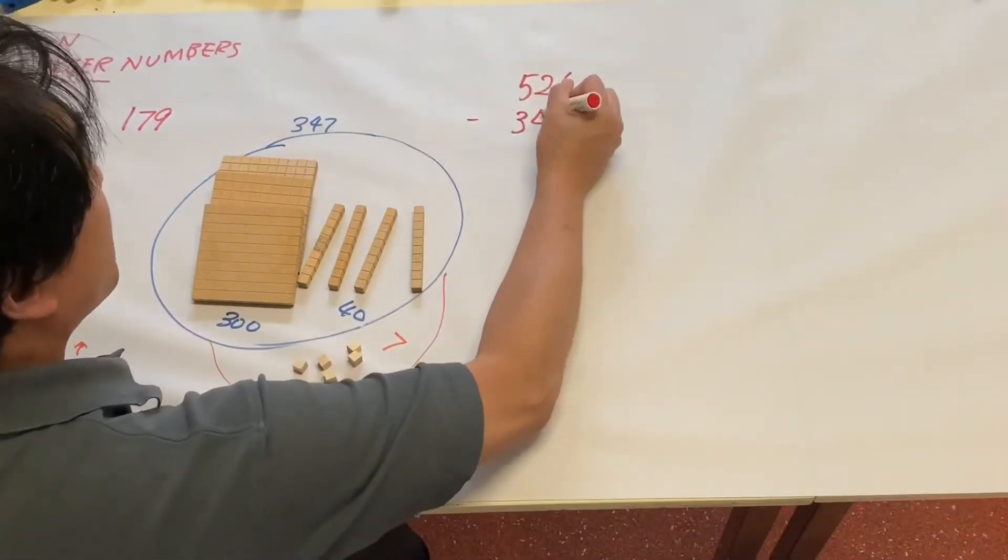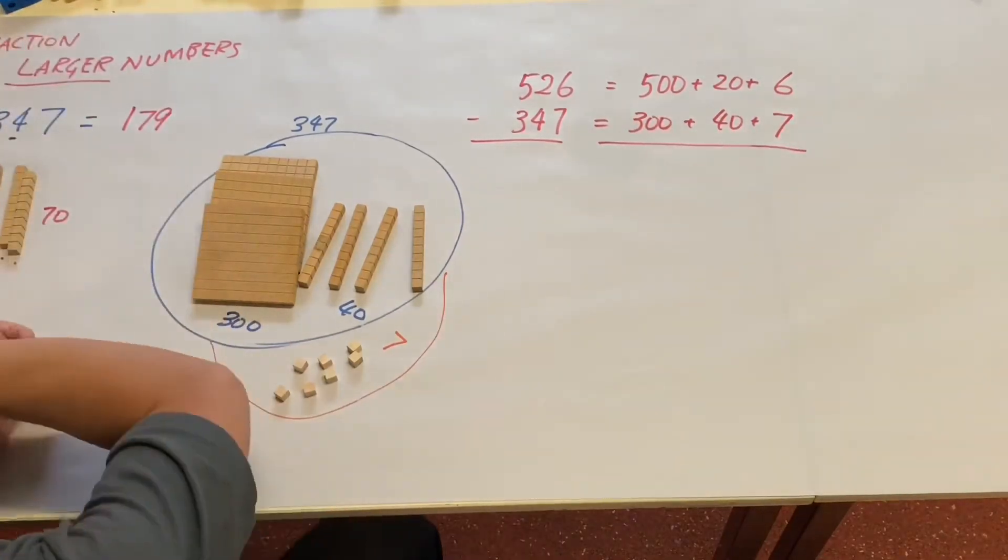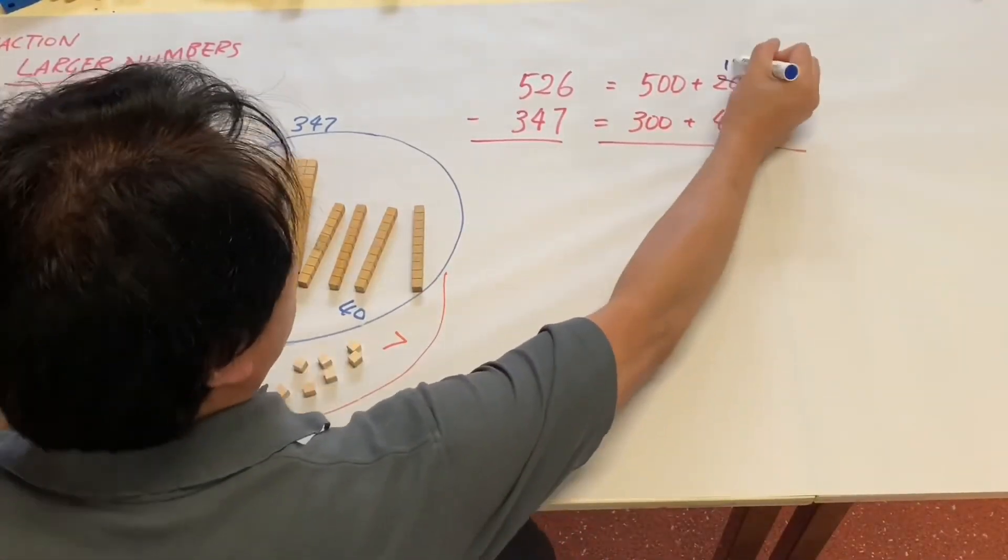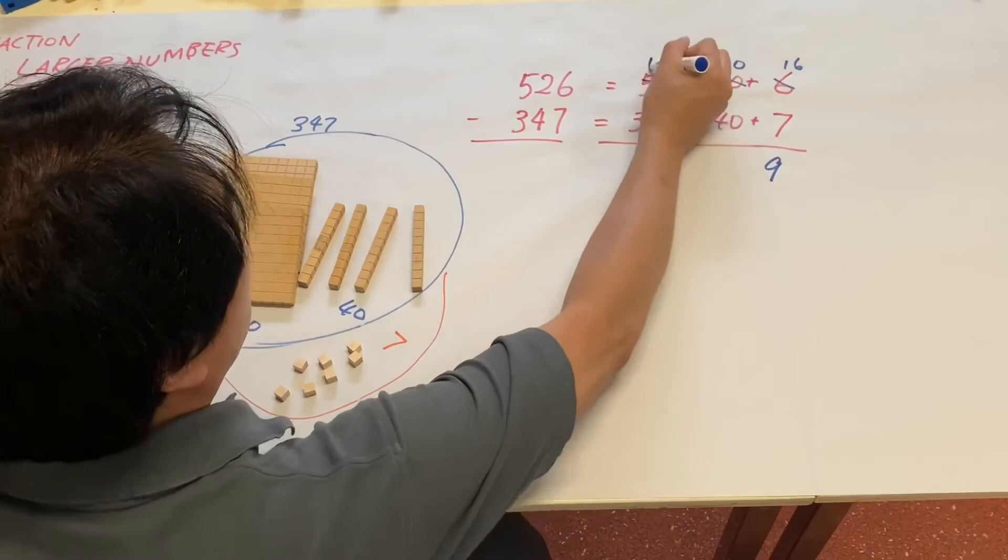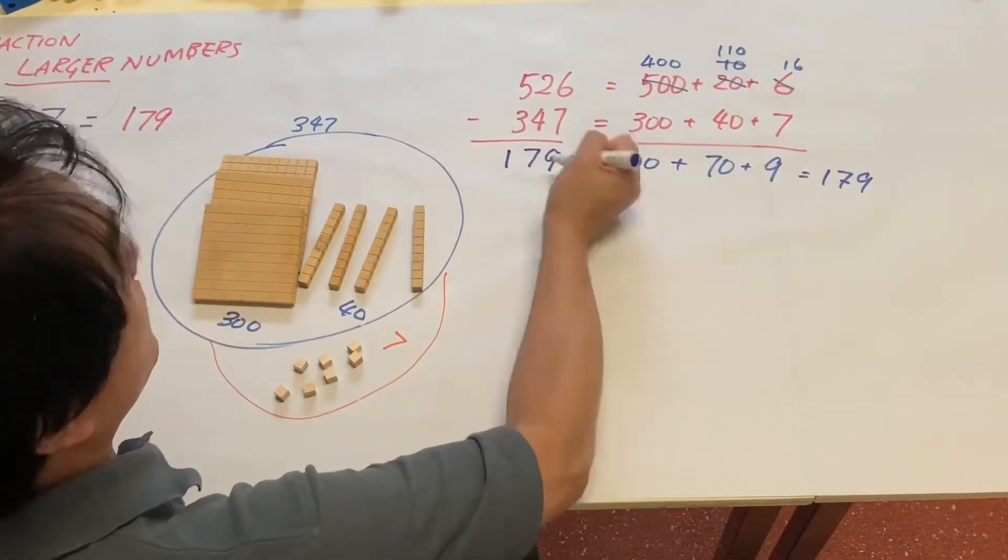Now the partial model: 526 is 500 plus 20 plus 6, 347 is 300 plus 40 plus 7. Now partial model, understanding a partial model is extremely important.